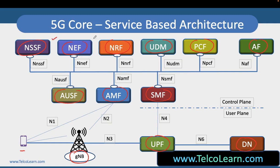All these network functions shown in this picture are not physical hardware. They are typically either some kind of virtualized network function or some kind of cloud-native network function, and they are all created in a cloudified environment by using COTS — Commercial Off The Shelf — hardware, which can be generic hardware or some kind of server that can use virtualization or containerization techniques and can host all these network functions.